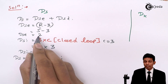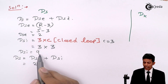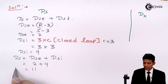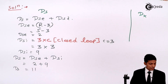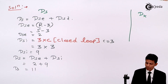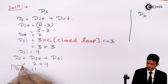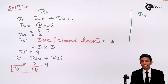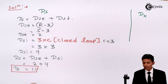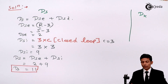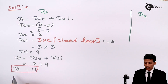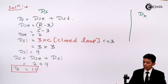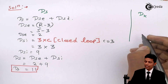So DS = DSe + DSi = 2 + 9 = 11. The final answer is DS = 11, or degree of static indeterminacy equals eleven. Now let's move on to find DK.